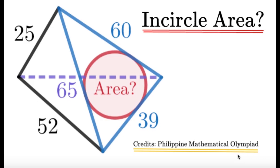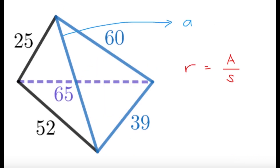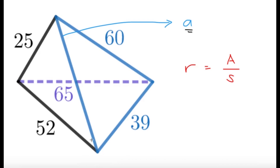So let's talk about what we're asked about — the area of the incircle. Obviously, if you want the area of the incircle, we're going to need the radius. There's a nice formula relating the inradius, since it's the radius of the inscribed circle, to the area and the semiperimeter of the triangle: R equals the area of the triangle divided by the semiperimeter. The problem is, to get the area I need three sides or an angle, and for the semiperimeter I need this third side — let's call it length A.